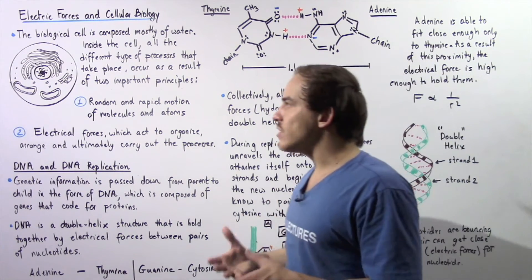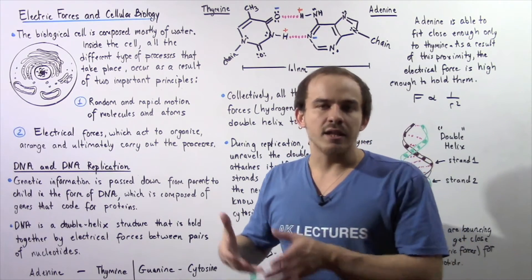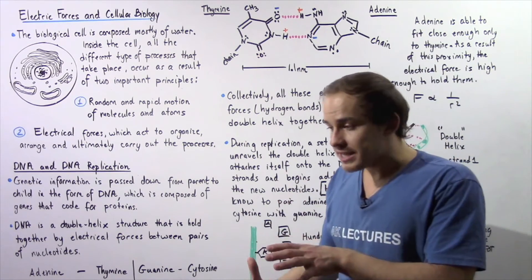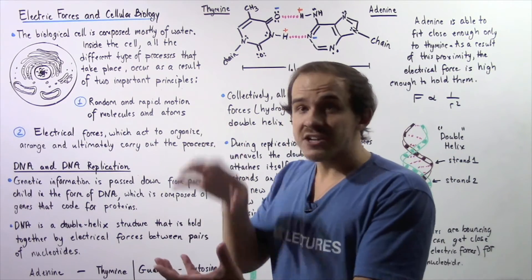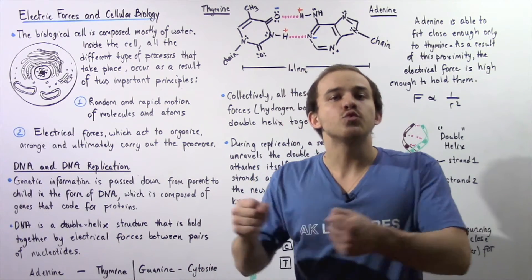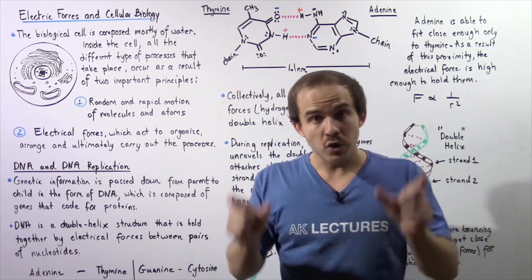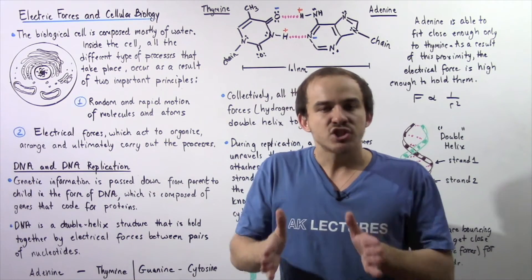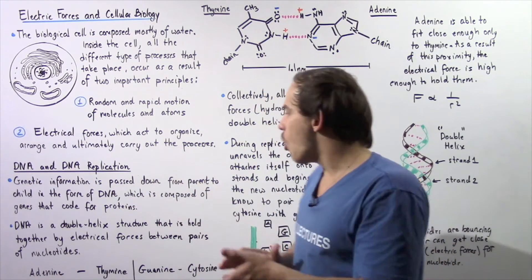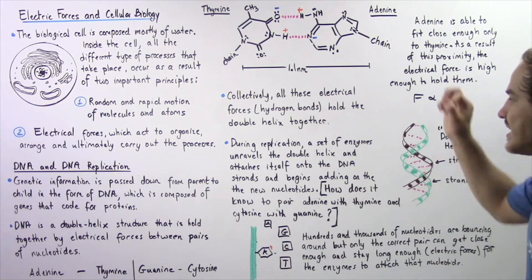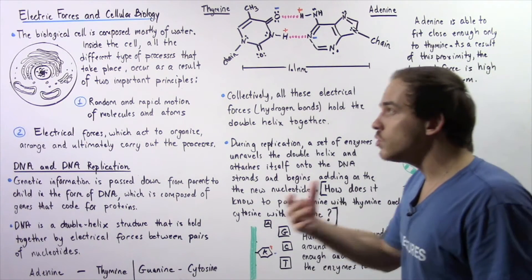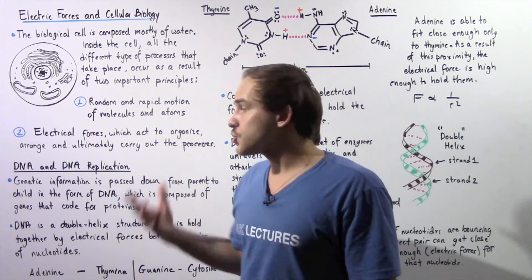Now let's talk about DNA replication. Right before the cell divides, DNA has to replicate. What happens is a chunk of proteins — enzymes — attaches itself to our DNA and unravels that DNA so that the double strands, our single strands, are exposed, and now our strands can be copied so that we can give that DNA to the offspring. During replication, a set of enzymes unravels the double helix, attaches itself onto the DNA strands, and begins adding new nucleotides to form a new strand of DNA.